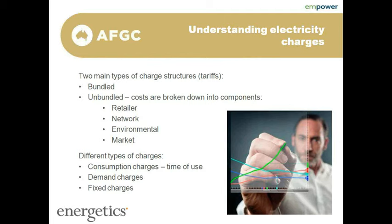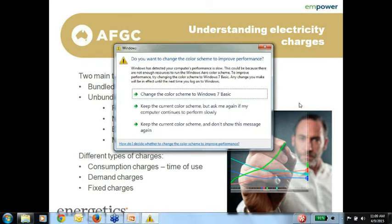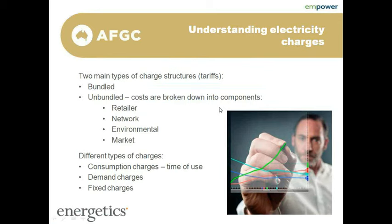It might be useful to have a bill handy to follow along; otherwise an example is on the next slide. Basically, there are two main types of electricity tariffs: bundled and unbundled. Bundled charges are typically what you'd see at home or for a small site — just a rate for electricity and a volume, so you use a certain number of kilowatt hours and the retailer charges a set rate in dollars per kilowatt hour. That's quite basic and relatively simple to understand.